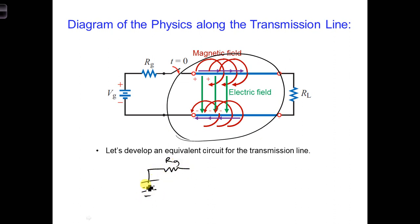This is Rg, Vg, and the load RL. But this does not account for the electric and magnetic fields we know will exist between and around the two conductors.